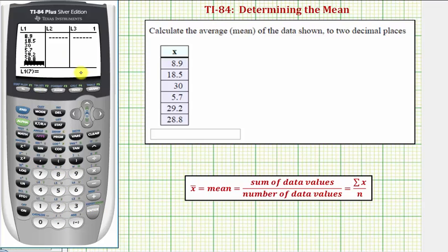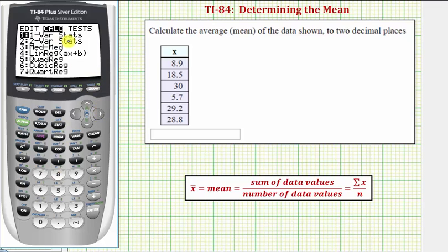Now that we have the data values entered, we want to select the one variable statistics tool by pressing STAT, right arrow once to CALC. The first option is one-var stats, which is what we want. We can press 1 or ENTER since one is already highlighted. So I'm going to go ahead and press ENTER.